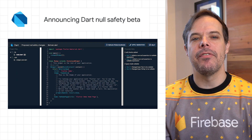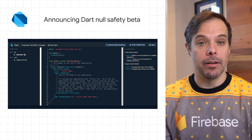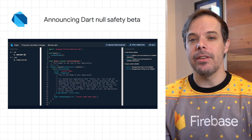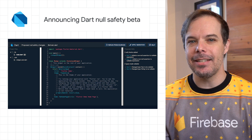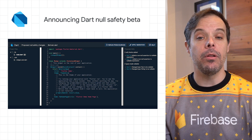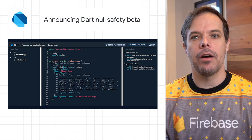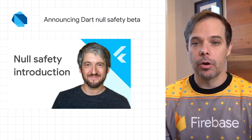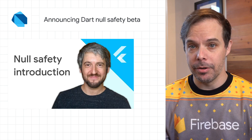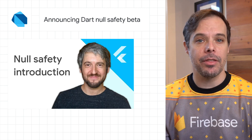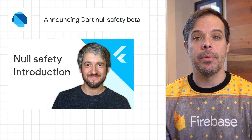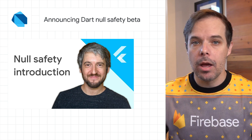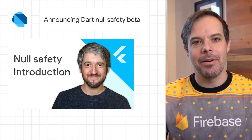Null Safety is now available in beta for Dart and Flutter. Null Safety is a productivity feature intended to help you avoid null errors, a class of bugs that are often hard to spot. For a quick summary of why we're excited about null safety, check out the video on the post linked in the description below or by swiping up on Instagram.